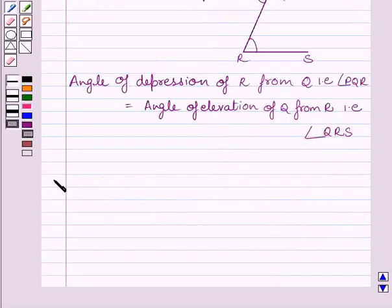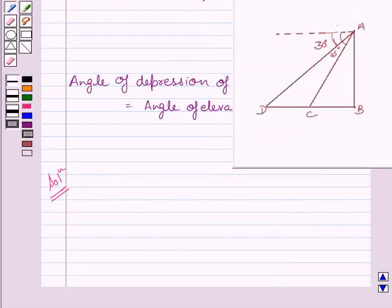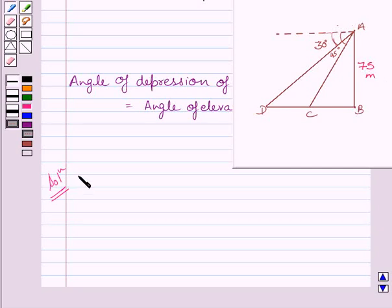Let us now start our solution. First of all, let us draw a simple diagram to represent the problem. Let AB denote the lighthouse. We know the height of the lighthouse is equal to 75 meters. So we can write: AB = 75 meters denotes the lighthouse.